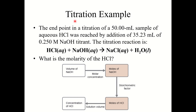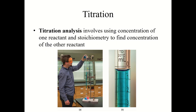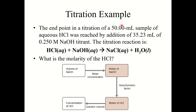Let's look at a titration example. The endpoint in a titration of a 50 mL sample of aqueous HCl was reached by adding 35.23 mL of 0.250 M NaOH. The reaction is: HCl + NaOH → NaCl + H₂O, a neutralization reaction. The HCl is in the beaker and NaOH is added from the burette until the indicator changes color. Using the volume and molarity of NaOH we can find moles NaOH, then use stoichiometry to find moles HCl, and finally use moles HCl and the volume of the HCl sample to find its molarity.